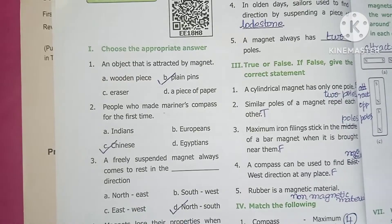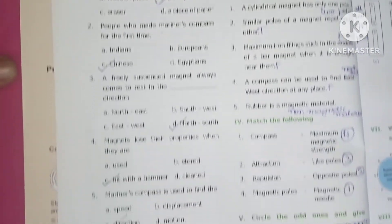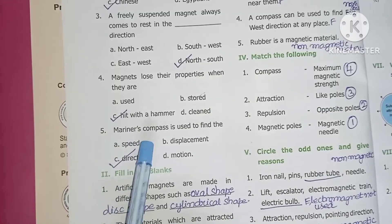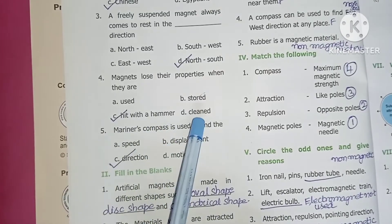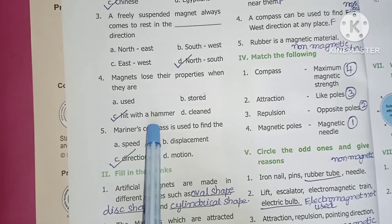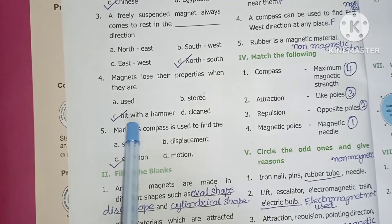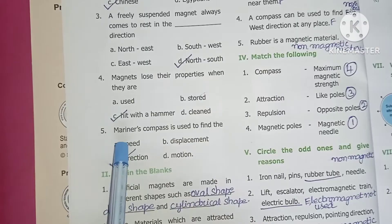Next, magnets lose their properties when they are hit with a hammer. The answer is hit with a hammer. Fifth, mariner's compass is used to find the direction.